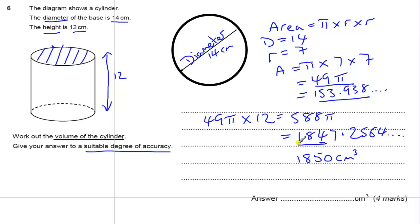Quite often you can do two significant figures, which would be to the nearest 100, which is 1,800 cm³. Either of those two are correct for 4 marks.